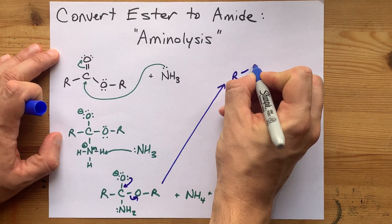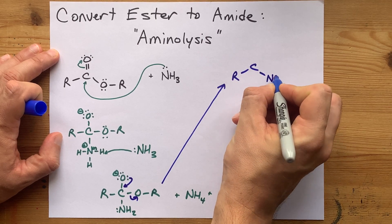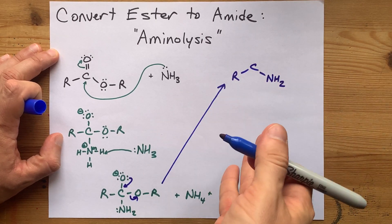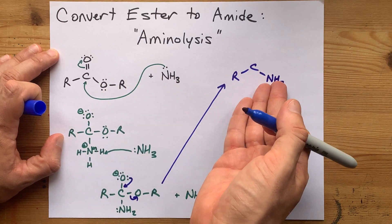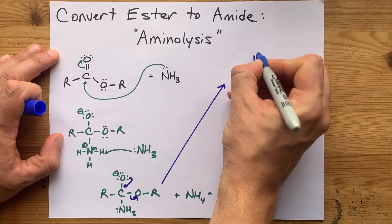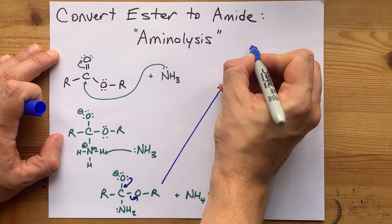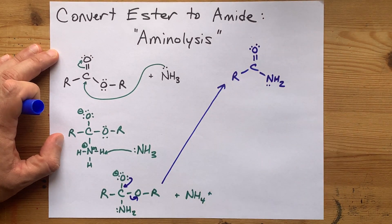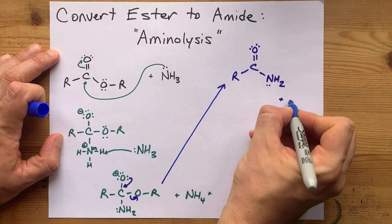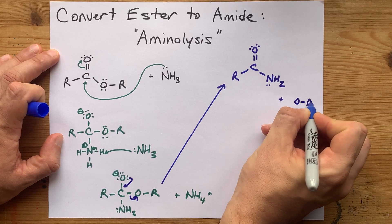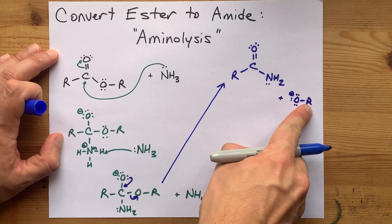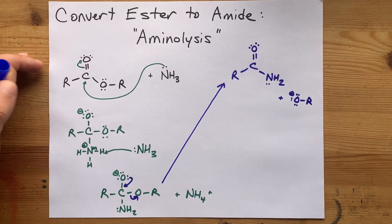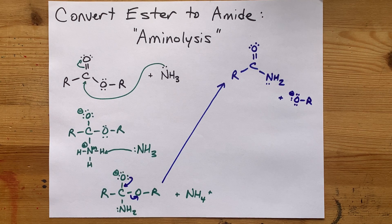Now you have R connected to C connected to NH2. Oh, look, we've kind of switched what was OR with NH2. And you have a double bonded oxygen here. Your byproduct of that step is OR-. That's the oxygen single bonded to an R, and it has a formal charge of minus one.